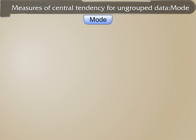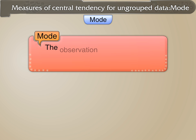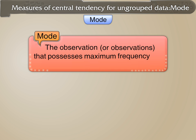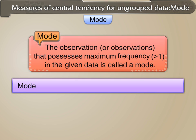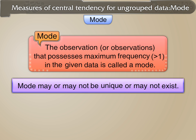Mode: The observation or observations that possess the maximum frequency, greater than 1, in the given data is called the mode. Mode may or may not be unique, or may not exist.